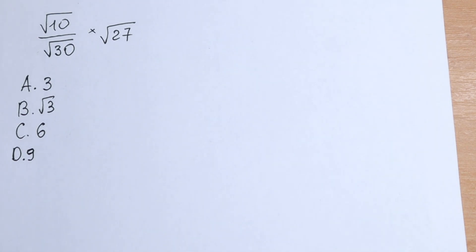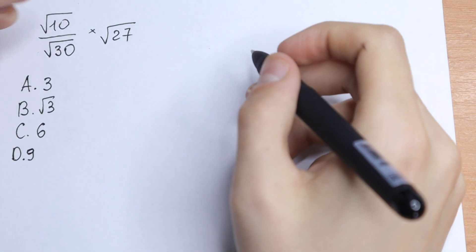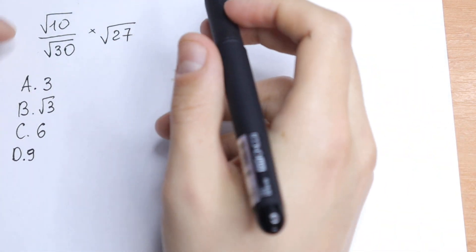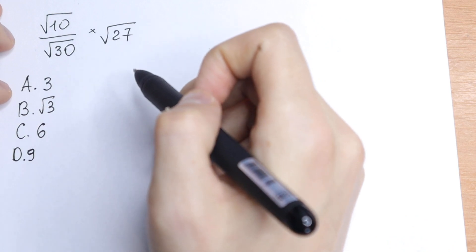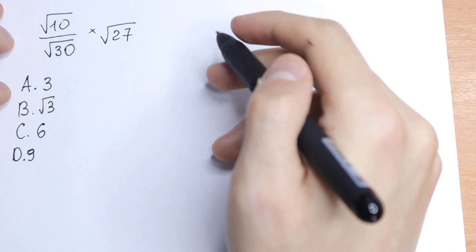Hello everyone! Welcome back to MathMode! Today we have an interesting algebra question. We need to simplify this: square root of 10 over square root of 30, multiplied by square root of 27.